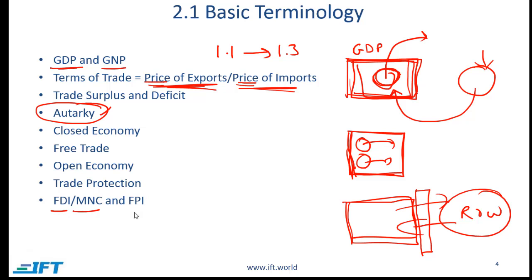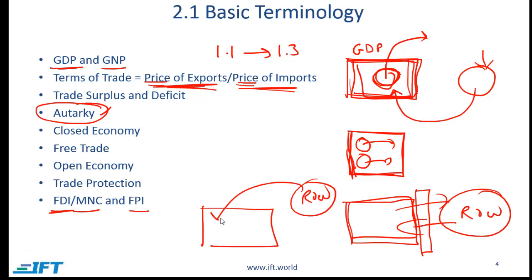FDI, MNCs, and FPI are a few other important terms. FDI stands for foreign direct investment — companies or entities from the rest of the world invest in a domestic country by building factories, for example. A classic example is a German company that builds a textile factory in India; typically it would be multinational companies that engage in FDI. FPI stands for foreign portfolio investment — for example, if an investment management company in America puts money in the Indian stock market, that is FPI.